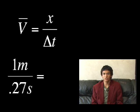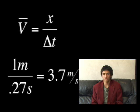One meter divided by 0.27 seconds equals 3.7 meters per second.